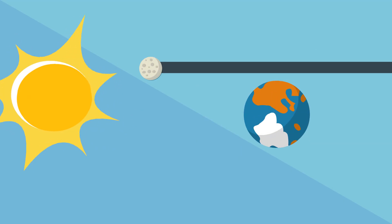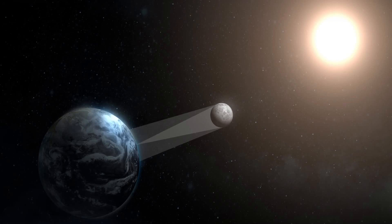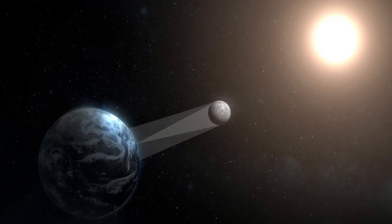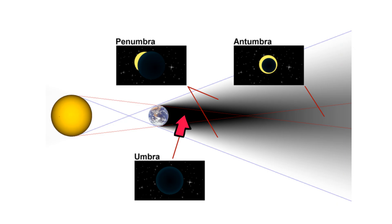When the moon or earth is blocking the sun, three types of shadows are created: the umbra, penumbra, and the antumbra. The umbra is the shadow's dark core. The penumbra is the less dark outer part of the shadow surrounding the dark core. And the antumbra is the lighter area of a shadow that appears beyond the umbra.